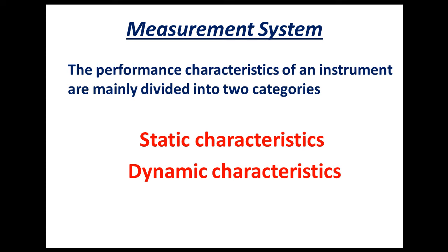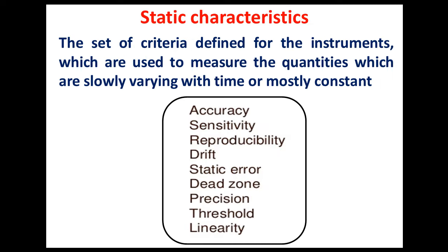In the measurement system, the performance criteria of an instrument are mainly divided into two categories: static characteristics and dynamic characteristics. First we will see what are static characteristics.